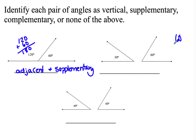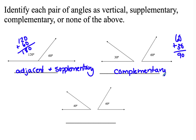Let's check the next one. I have 60 plus 30 equals 90, so these are complementary. Over here I have 60 plus 40, which is 100, so this one is none.